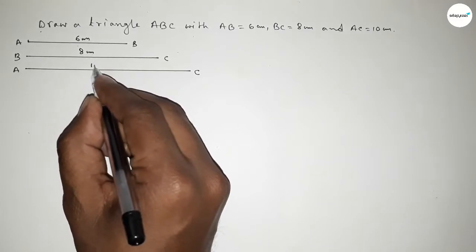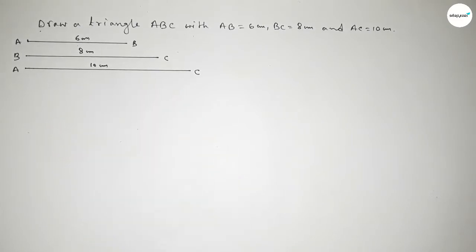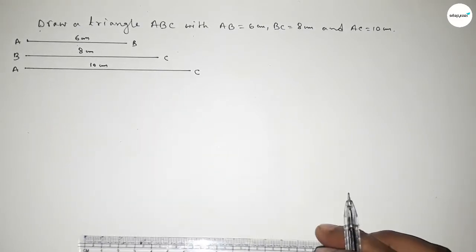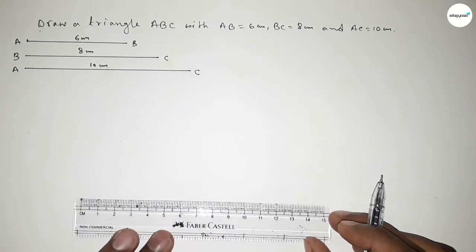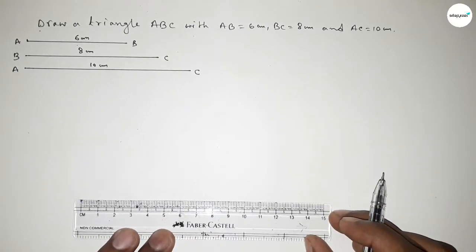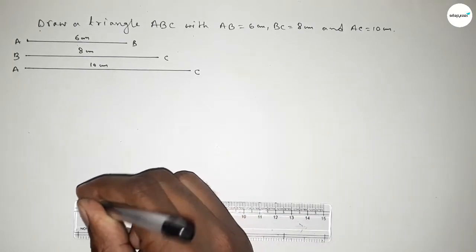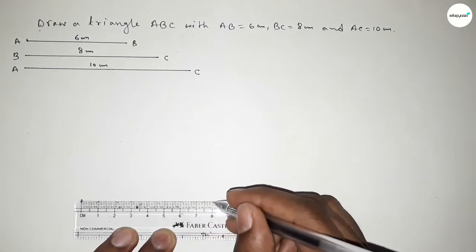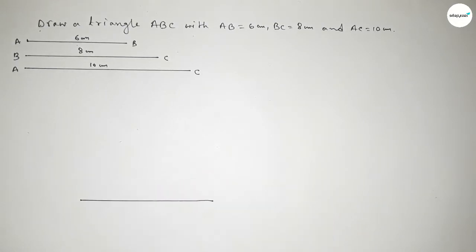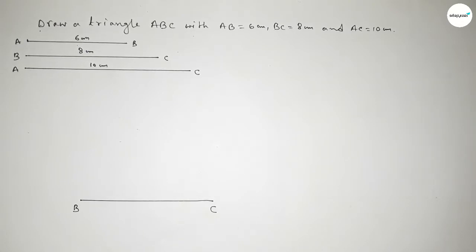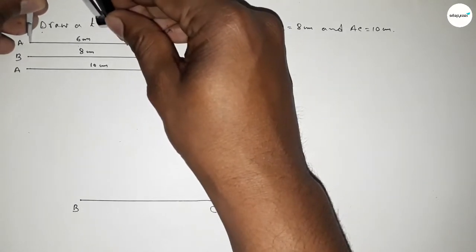Now first we have to draw a line of length 8 centimeters here. Drawing a line of length 8 centimeters — this is 8 centimeters — and taking point B here and point C here. Now taking the length AB equal to 6 centimeters using a compass.